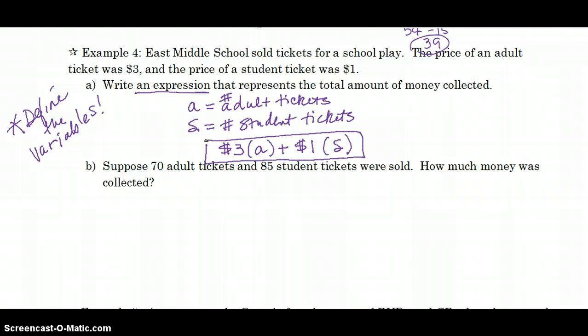Alright. So, part B says, now let's suppose we know that A was 70. They sold 70 adult tickets and S is 85. They sold 85 student tickets.